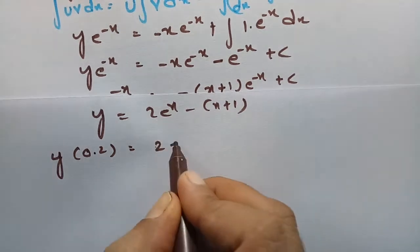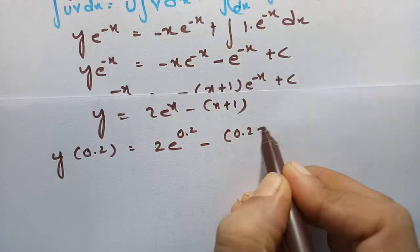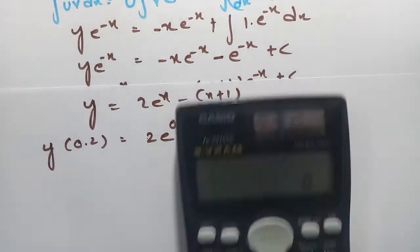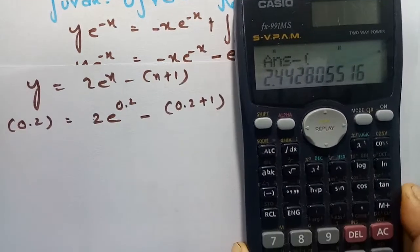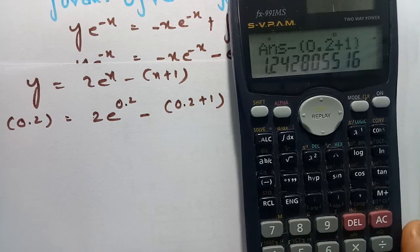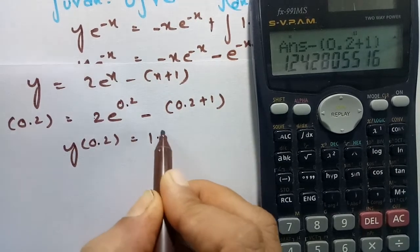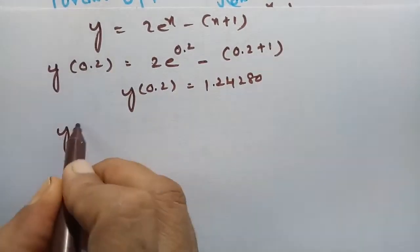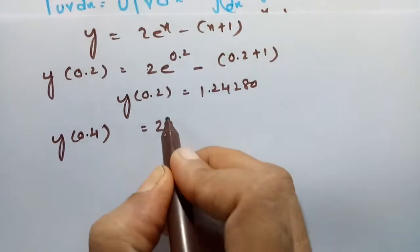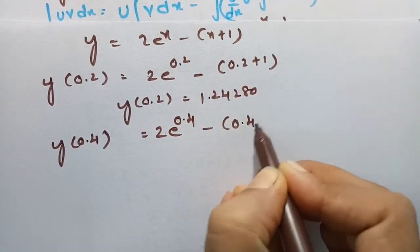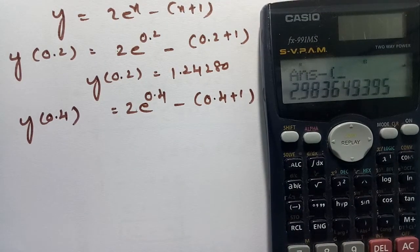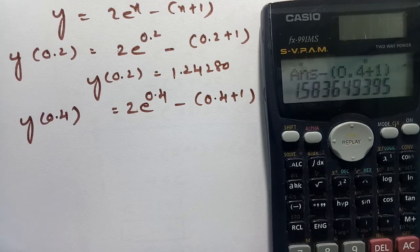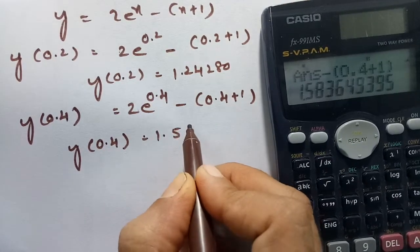Using the exact solution y = 2e^x − (x + 1), at x = 0.2: y = 2·e^(0.2) − (0.2 + 1) = 1.2428. At x = 0.4: y = 2·e^(0.4) − (0.4 + 1) = 1.5836.